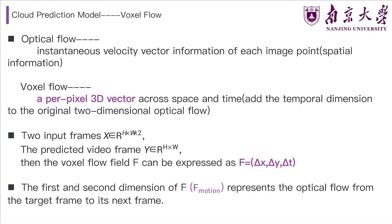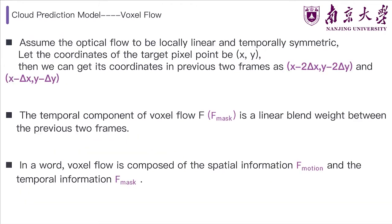The voxel flow adds the temporal dimension to the original two-dimensional optical flow. It is a per-pixel 3D vector across space and time. The voxel flow field is on a 2D grid of the entire target pixel location. The voxel flow field F can be expressed as (delta x, delta y, delta t). The first and second dimensions of F represent the optical flow from the target frame to the next frame, which can be understood as the spatial component of the voxel flow. The optical flow is assumed to be locally linear and temporarily symmetric between two consecutive frames. In this case, we will be able to find the location of a target pixel point in the previous two frames. Let the coordinates of the target pixel point be (x, y). Then we can get its coordinates in the previous two frames as (x minus 2*delta x, y minus 2*delta y) and (x minus delta x, y minus delta y).